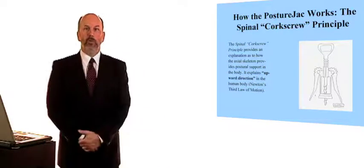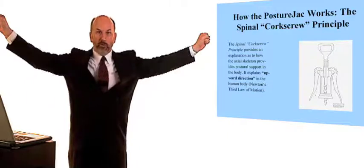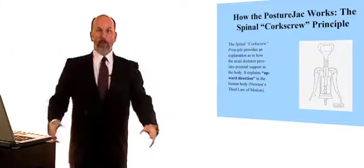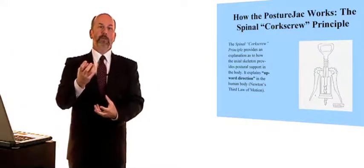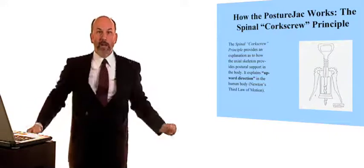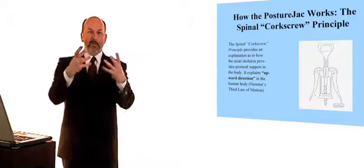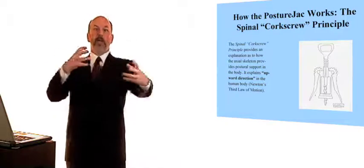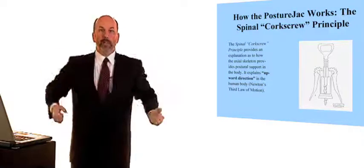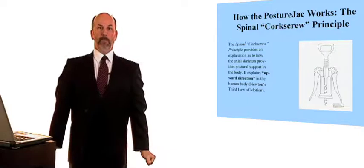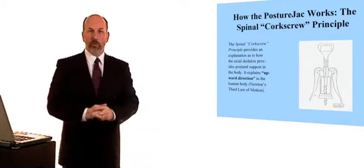If you look at the way the corkscrew works, as the arms of the corkscrew descend, the cork is thrust upward out of the bottle. It would be similar to a rocket blasting off, similar to letting the air out of a balloon. The balloon goes forward as the air goes backward. So we have this action-reaction mechanism that's illustrated with the use of the corkscrew.